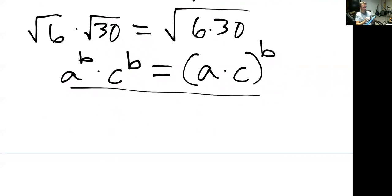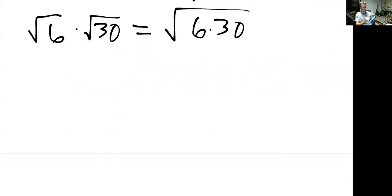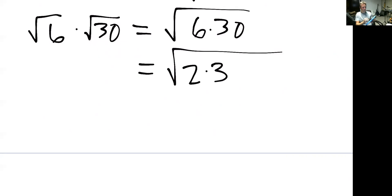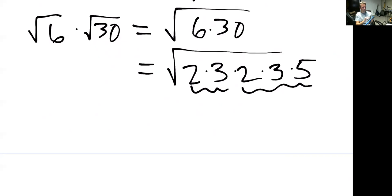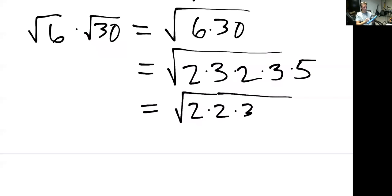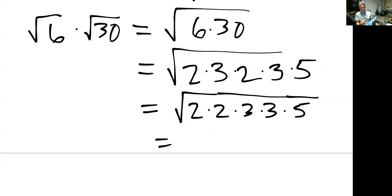Now we'll evaluate using prime factorization. Six is two times three. Thirty is two times 15, which is three times five. So here's our six, and here's our 30. We can rearrange multiplication, so we've got the square root of two times two times three times three times five. In reverse of what we did before with six and 30 coming together under one radical, we can break this one radical into multiple ones as a step.